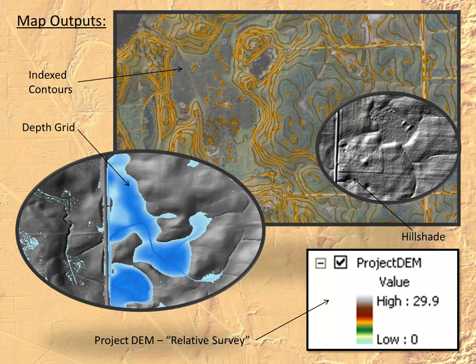The map outputs of the first step include nicely indexed contour lines, the depth grid, hillshade, and the project DEM. In this case, we have 29.9 feet of rise in the DEM, so our lowest elevation is zero and the max is 29.9.